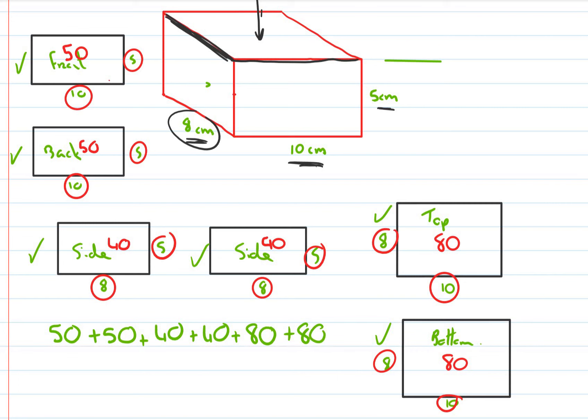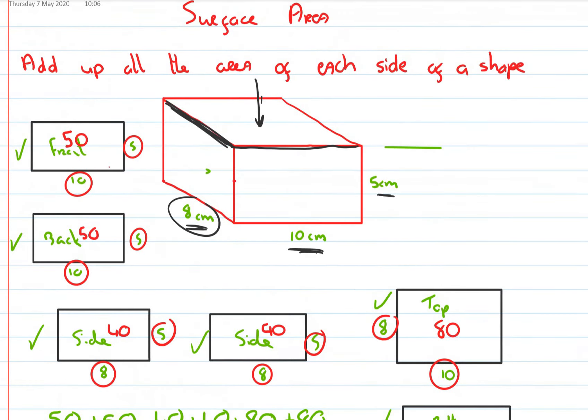And in an exam, please write it down. And that will give us 340 centimeters squared. Now you might think, well hold on, that's a 3D object. So should it be centimeters cubed?